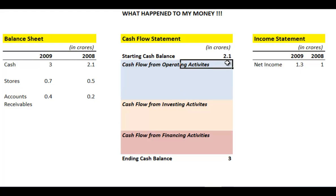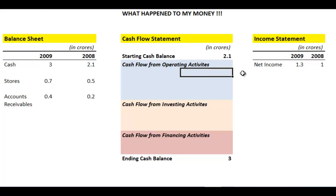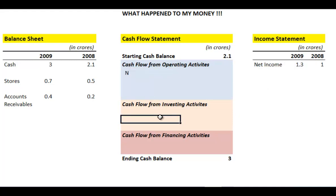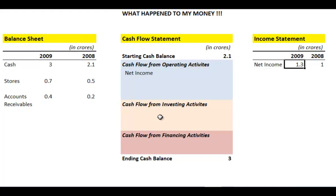We're going to reconcile this 2.1 crore cash balance to the 3 crore cash balance. The first place we start is cash flow from operating activities. You could go through the income statement one by one, but what is the bottom line? After all your revenue and expenses, that is your net income. So you write down your net income as cash flow from operating activities. The money from net income in 2009 is 1.3 crores — a positive number. You write down 1.3 crores of money came into the company.